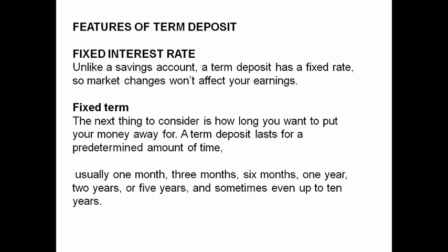In the money market, the interest rate fluctuates — today's rate may not be tomorrow's. But in a fixed term deposit, the interest rate is fixed and earnings are not affected. Fixed term: how long you put your money away for — a term deposit lasts for a predetermined amount of time, which may be 1 month, 3 months, 6 months, 1 year, 2 years, or 5 to 10 years.